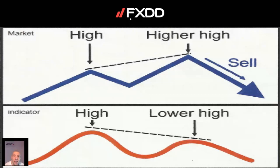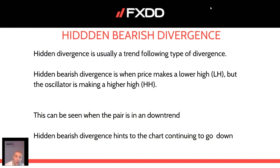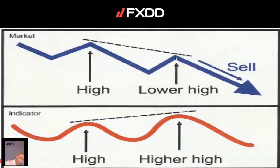You need to have other rules if you want to be profitable by trading divergence. Regarding the standard divergences, we have hidden bearish divergence — that is usually a trend-following type. Hidden bearish divergence usually happens when price makes a lower high but the oscillator is making a higher high, and this can usually be seen when a pair is in a downtrend. A hidden bearish divergence hints to the chart continuing to go down. The price is making a lower high while the indicator is making a higher high. You trade it within a trend concept, not if you want to go counter-trend.